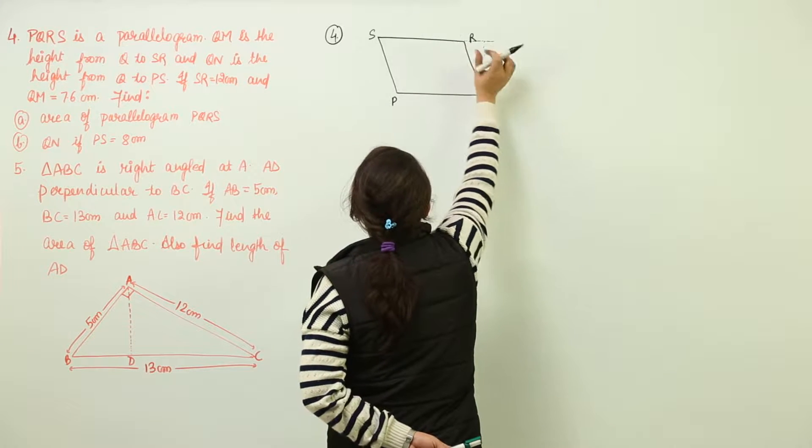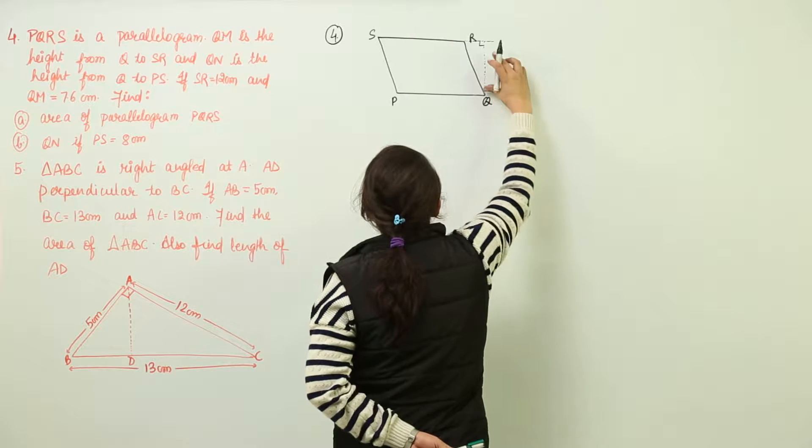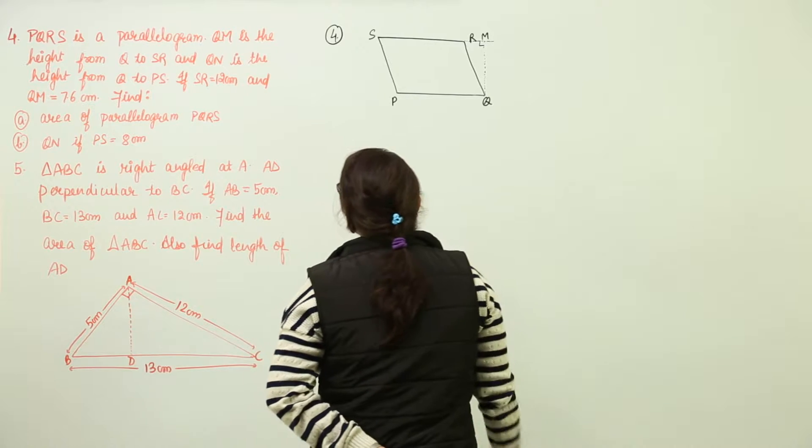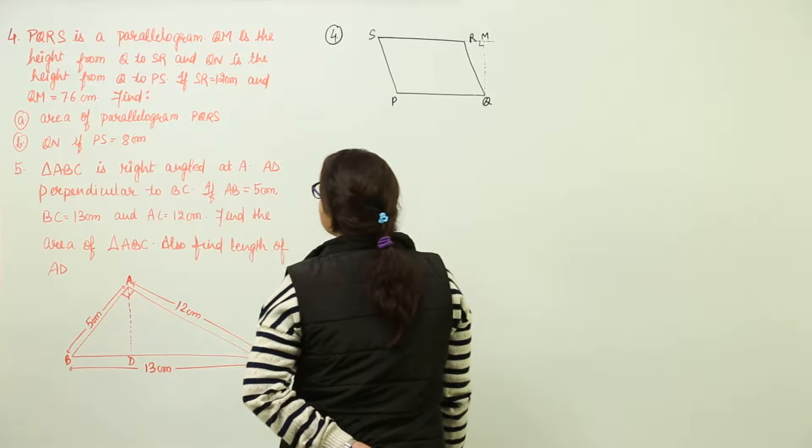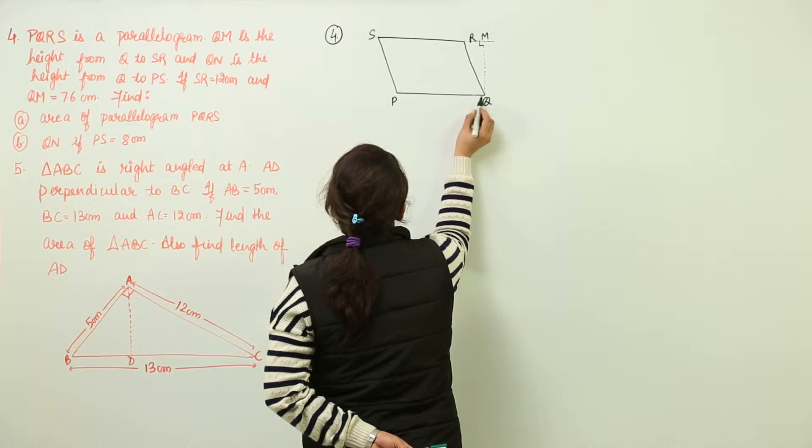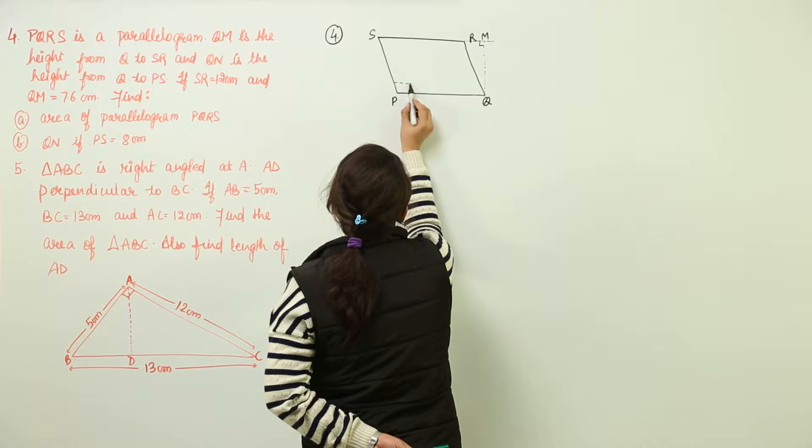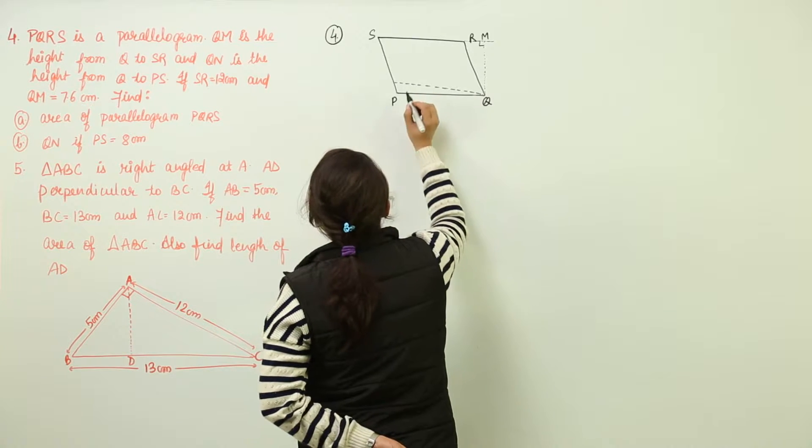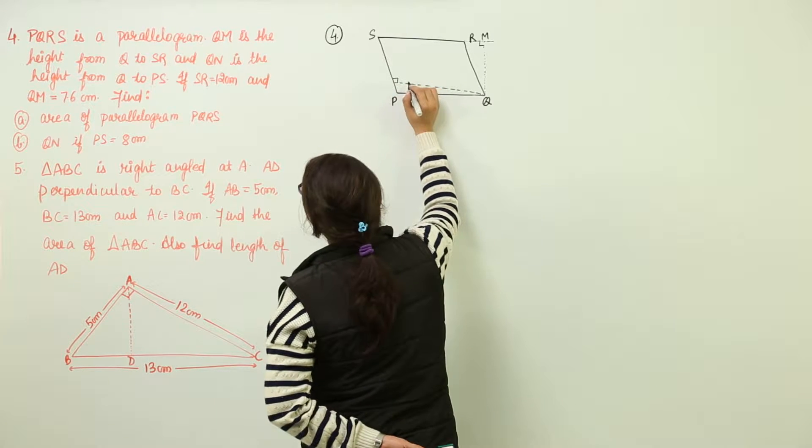If you extend SR you will check that QM is going to be the height for SR. Next we have QN as the height from Q to PS. So again we are going to draw a perpendicular from point Q to PS that is this one and this is known as QN